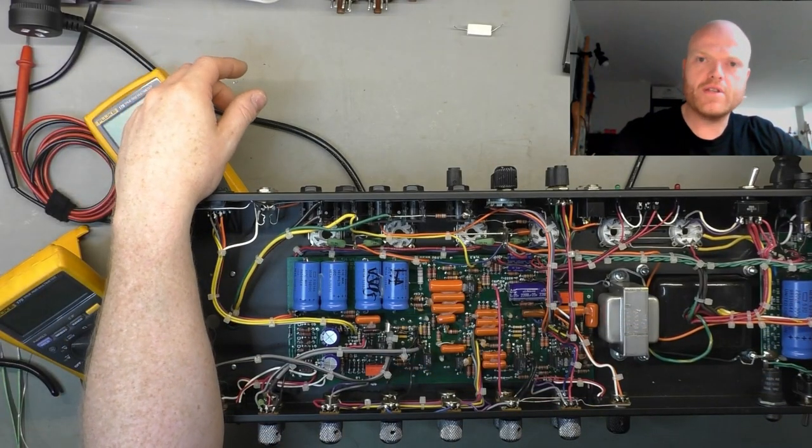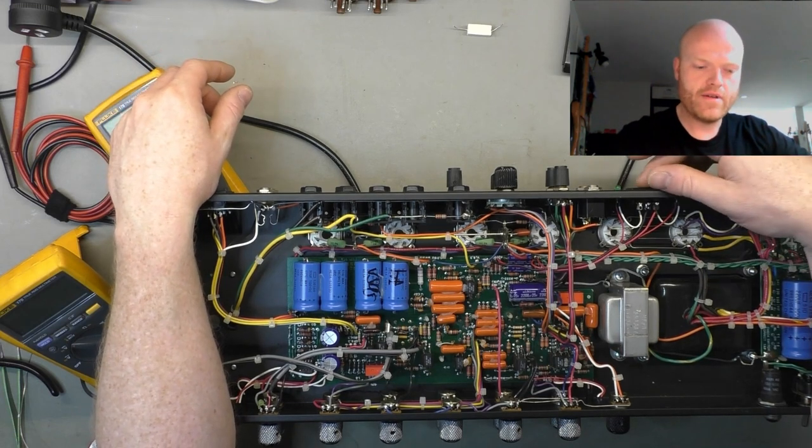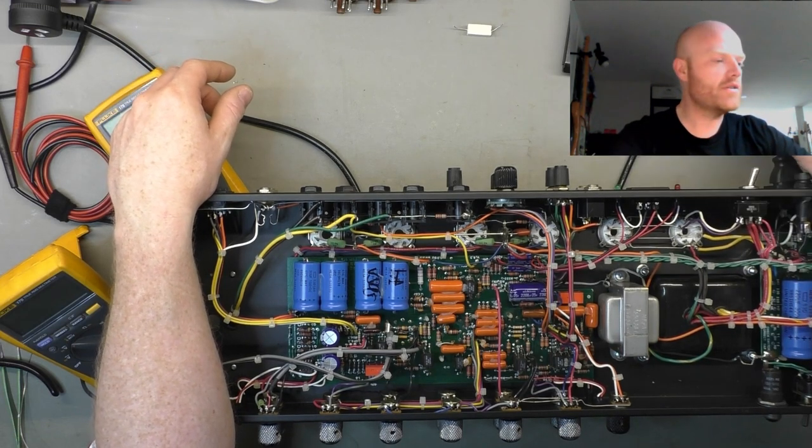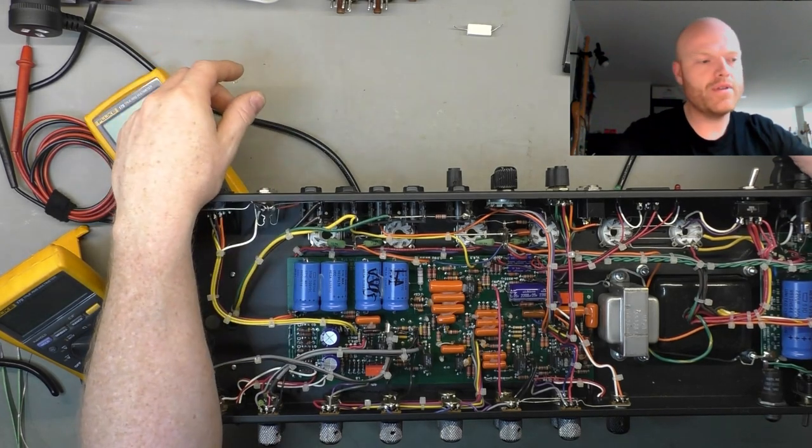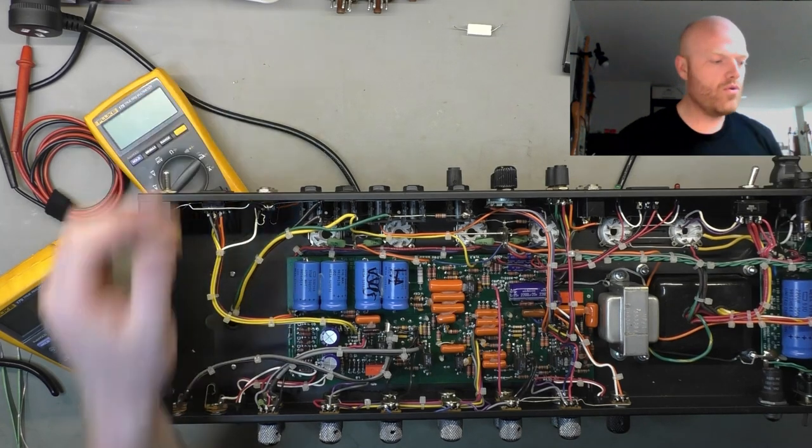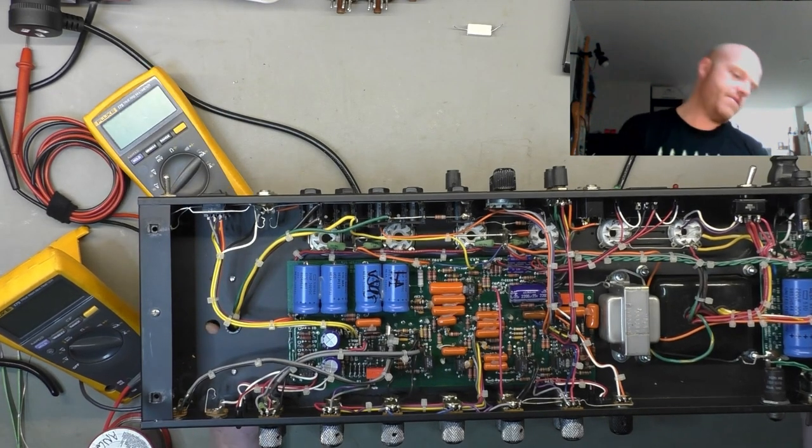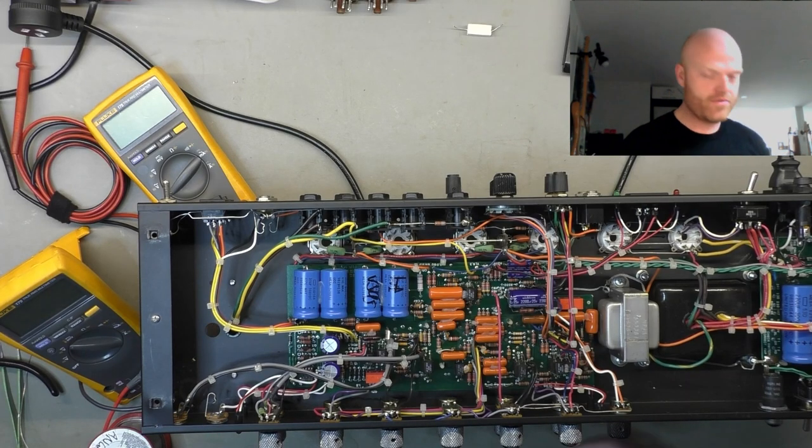So we're going to whack a new set of valves in there. 6L6s, this amp can take EL34s or 6L6s. The customers opted for 6L6s so we'll put them in. A new matched quad from JJs. We'll pack the unit up a little bit so the valve's got clearance to the bench. And we'll start doing some initial testing.